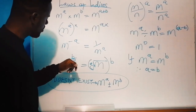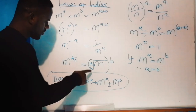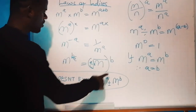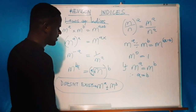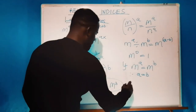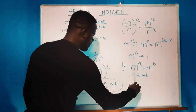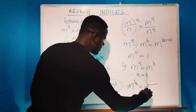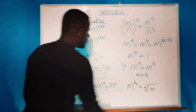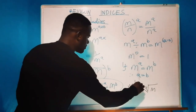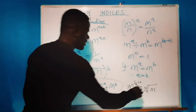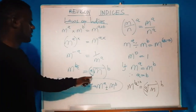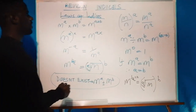The fourth law: m raised to b over a is the same as the a-th root of m. So m raised to one over a is the a-th root of m, and multiplying by b gives m raised to b over a as the a-th root of m to the power b.